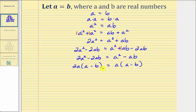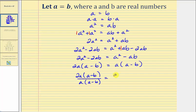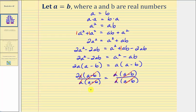Notice that both sides of the equation have a factor of A as well as a factor of A minus B. So for the next step, we'll divide both sides of the equation by A times the quantity A minus B. We'd have two A times the quantity A minus B divided by A times the quantity A minus B, equals A times the quantity A minus B divided by A times the quantity A minus B. When we simplify, the left side simplifies to two and the right side simplifies to one — giving us what seems to be a proof that two equals one, or one equals two.